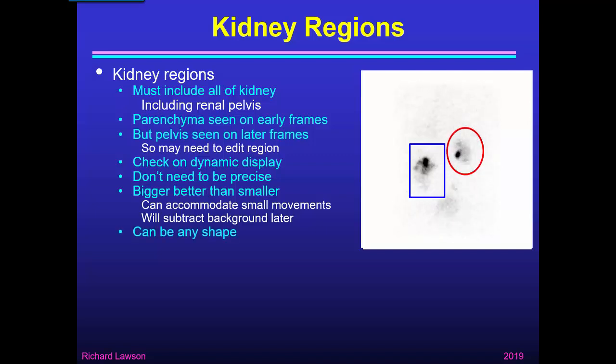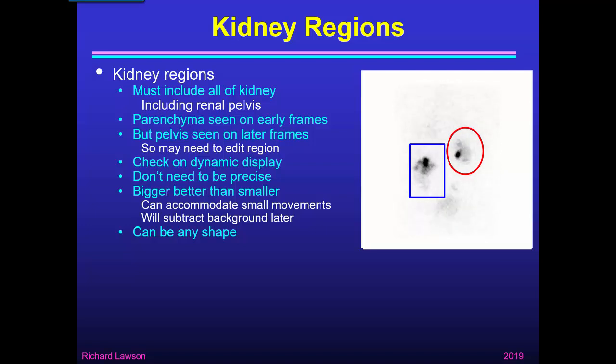The regions can be any shape. If all your computer can do is rectangular or elliptical regions, that's fine as long as it includes all of the kidney.